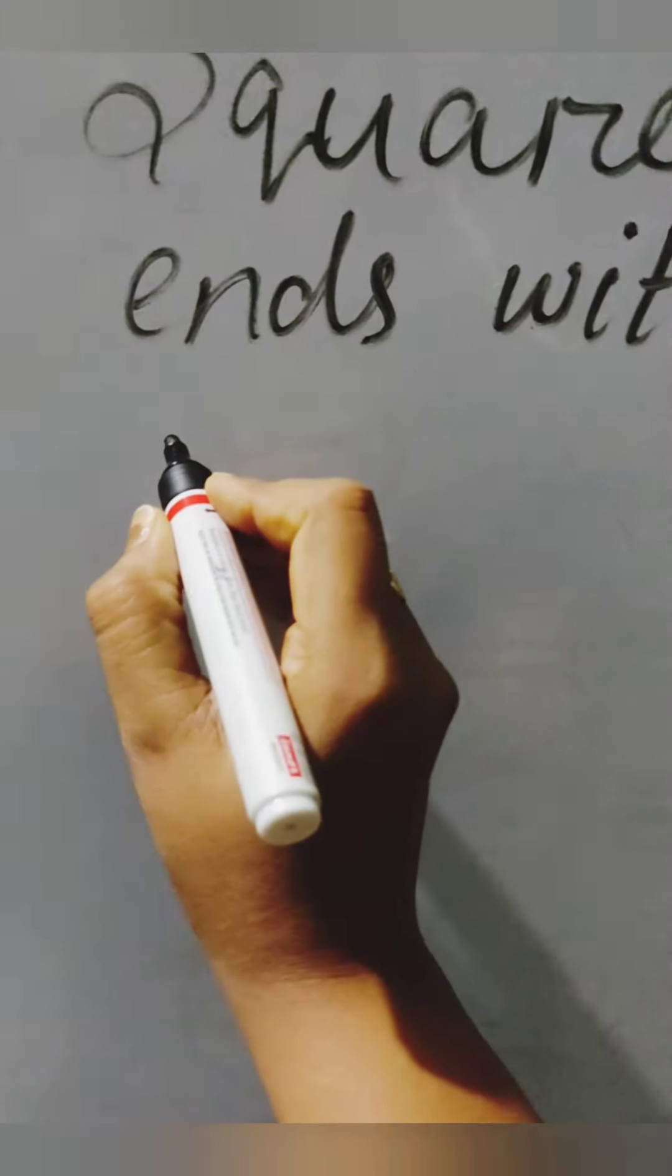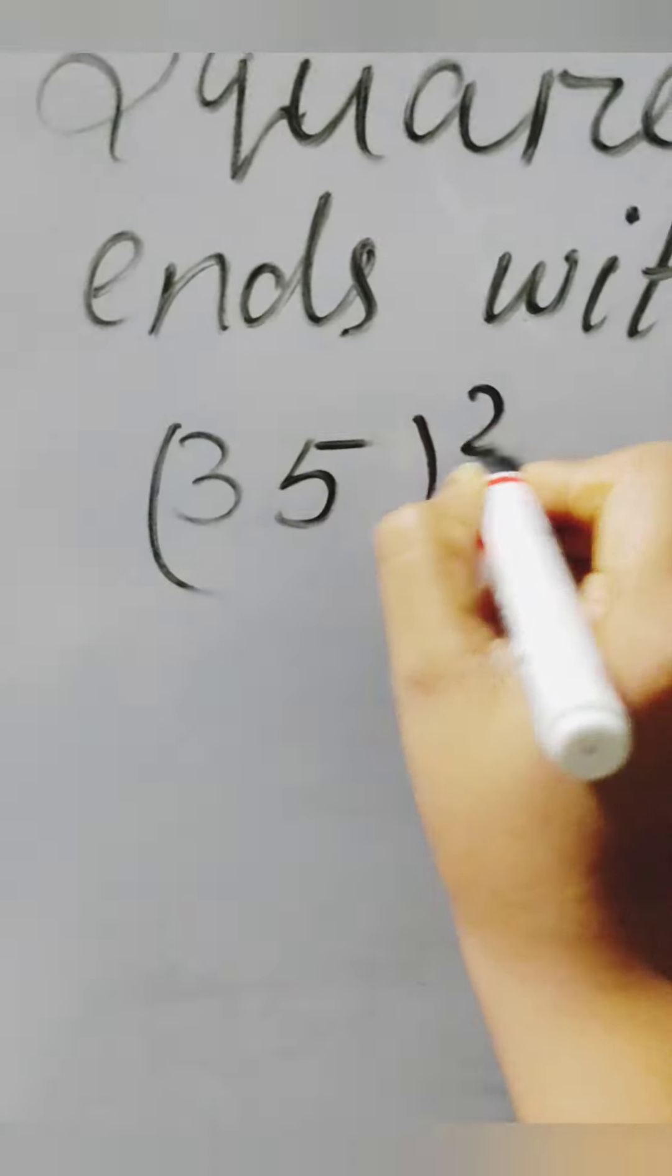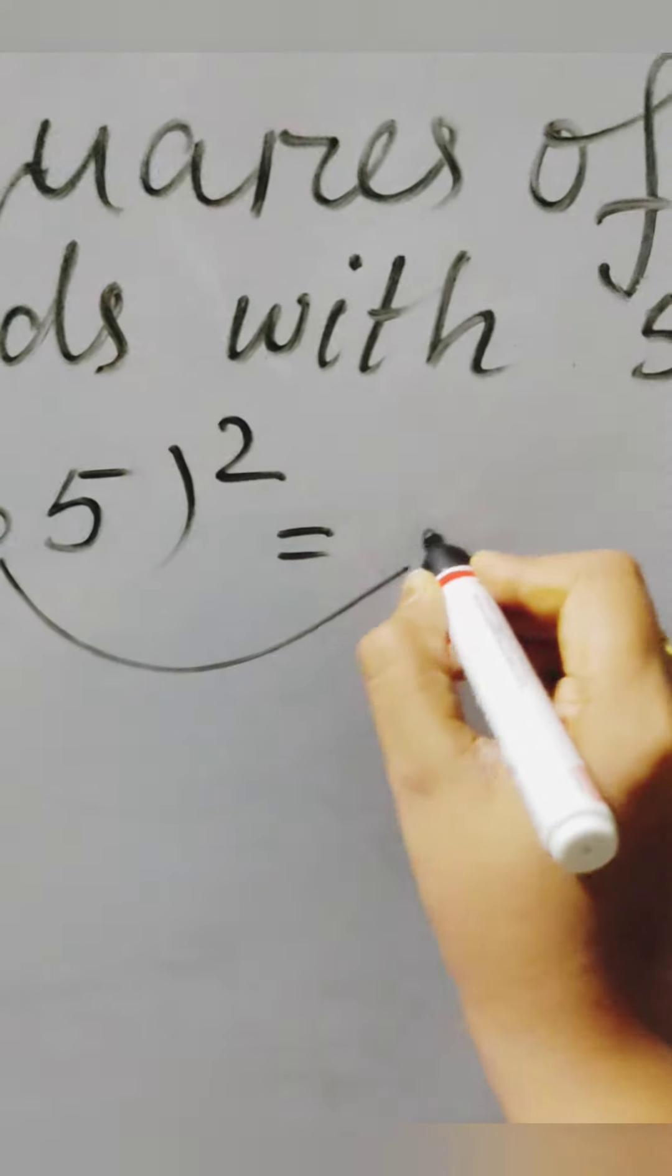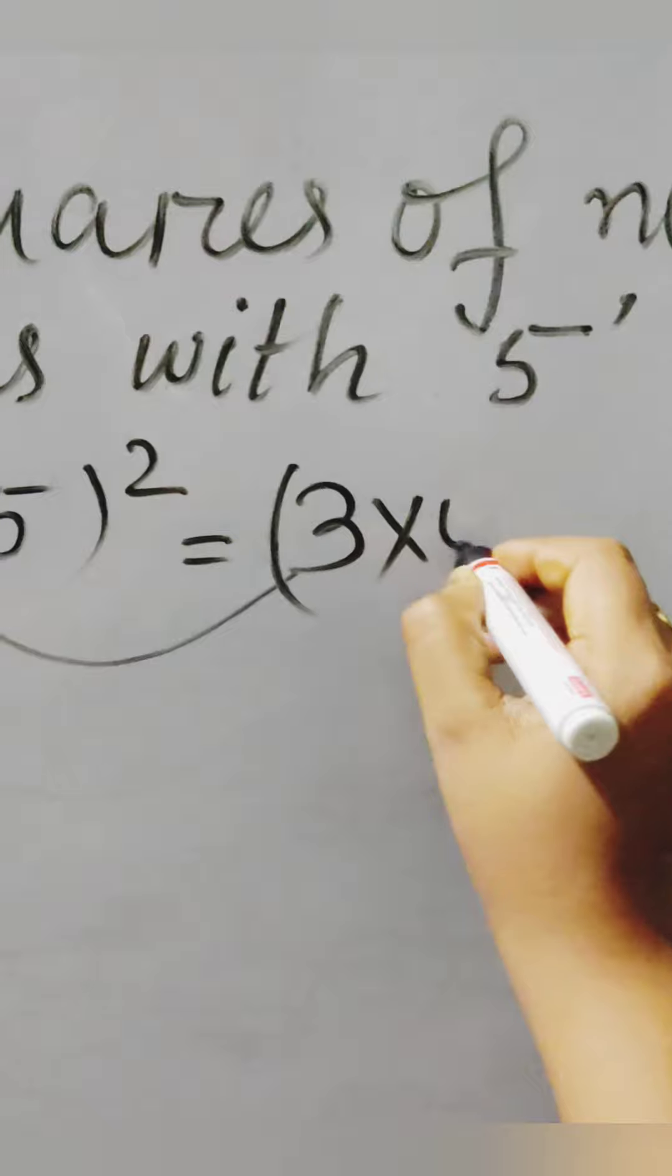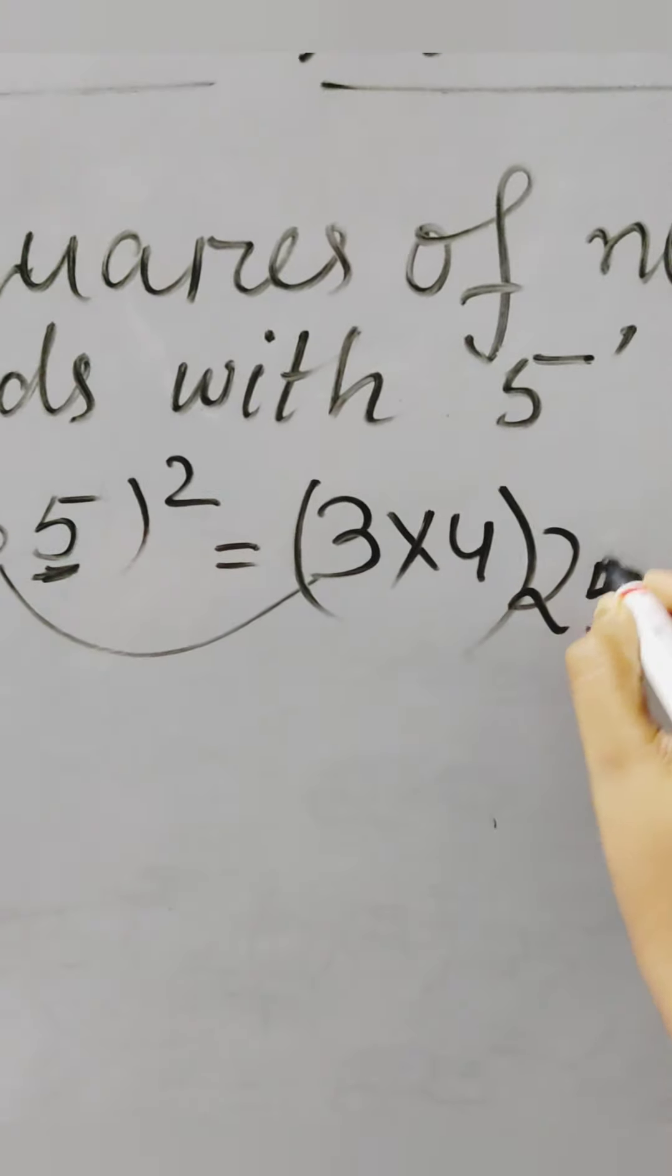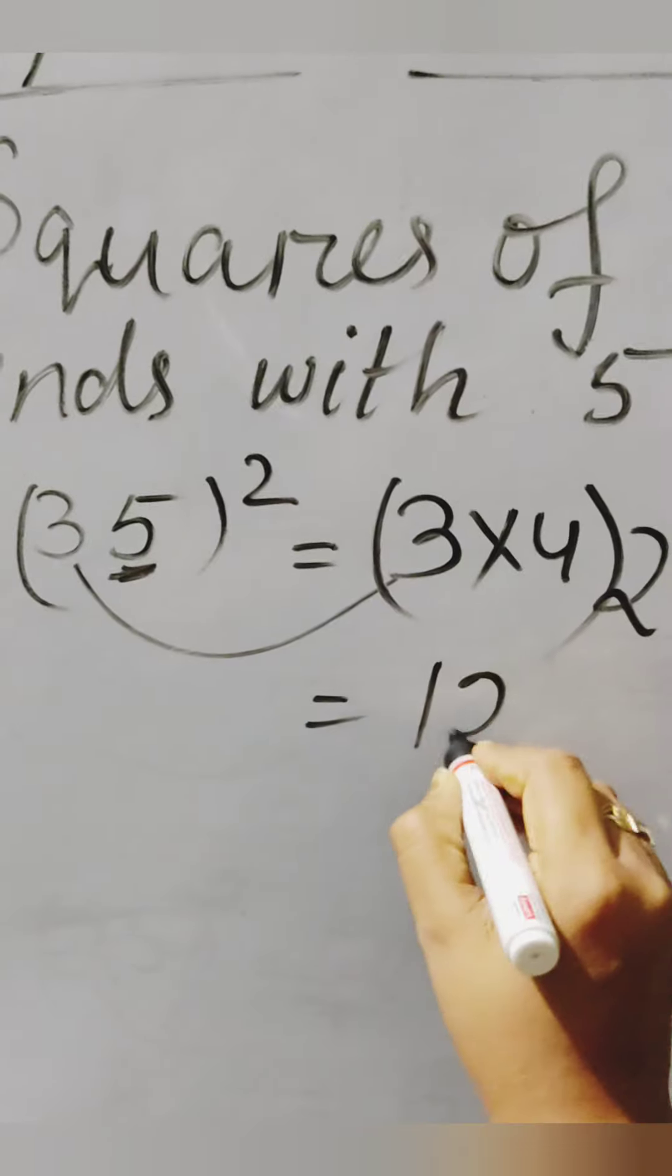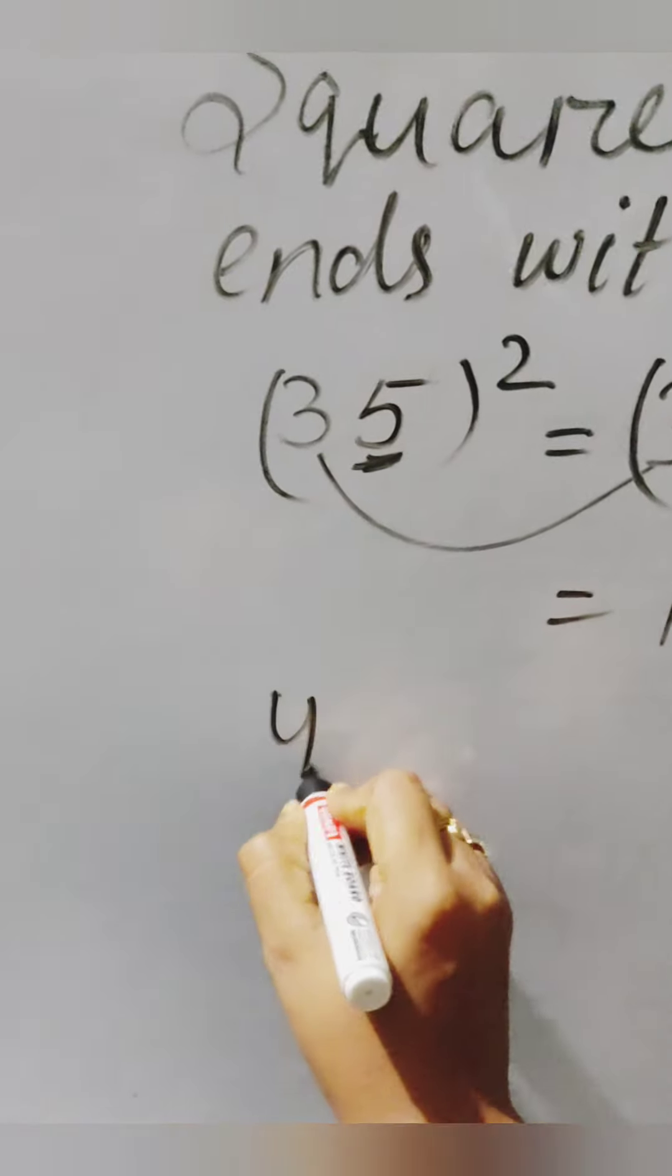If still you didn't get it, then let's do it again. 35 squared. In the tens case it is 3, and next to 3 is 4. And write down 5 squared which is 25 nearby it. So the answer is 1225. You can multiply and get the answer.